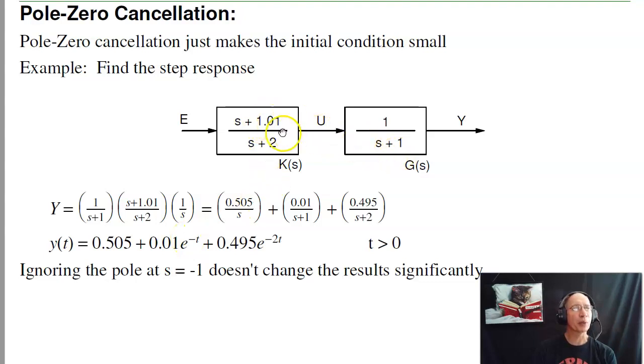In this case, I've got a very small initial condition that goes away. Likewise, there's not a problem ignoring this pole. It's not going to have a huge effect on the output. So if I cancel a stable pole, that's okay. The initial condition is small, and it gets smaller.